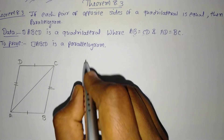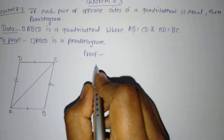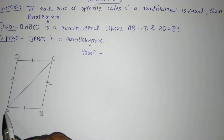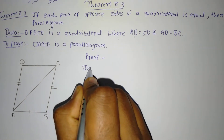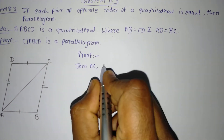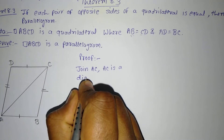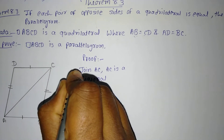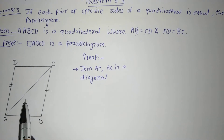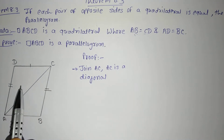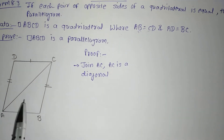Let us begin with the proof. First of all, join AC — AC is a diagonal of the quadrilateral. If we draw diagonal AC, then quadrilateral ABCD is divided into two triangles. Let us now compare and find the correspondence between these two triangles.